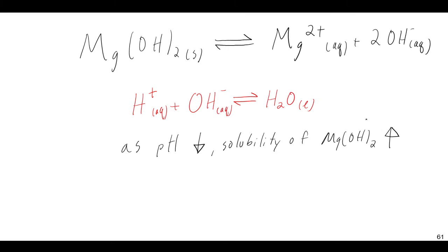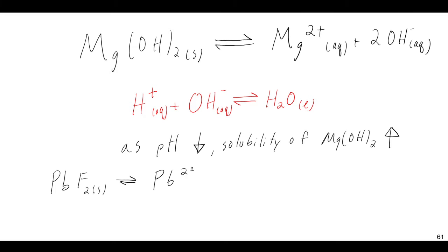In general, as pH decreases, solubility increases for substances with a basic anion. So while it's obvious to see it here for OH⁻, this is generally going to be true for anything with a basic anion. What is a basic anion? You can think about something like lead fluoride, where the equilibrium would be making Pb²⁺ and two F⁻.